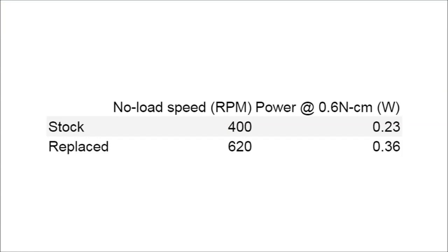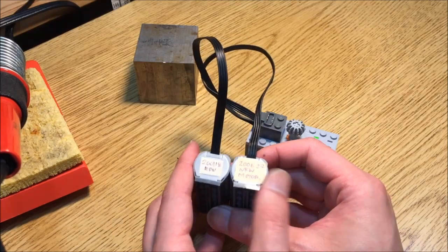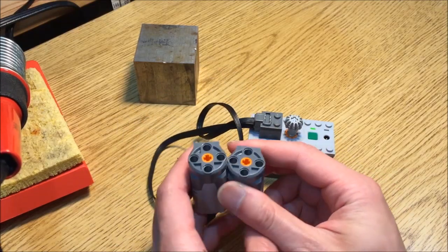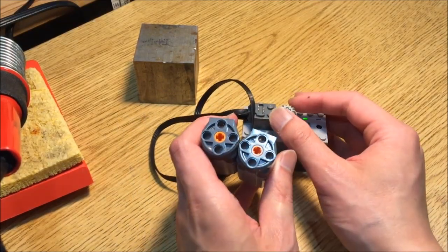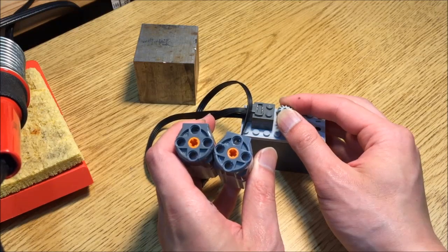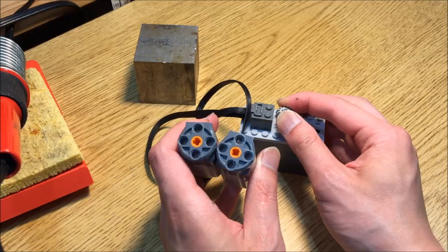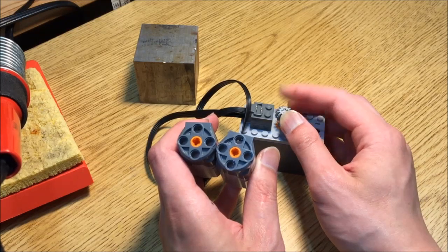It ran faster and generated more power than a standard M motor, which might seem good but not in the context of something like GBC. I might have measured something wrong or the motor might not have met the listed spec, but either way I decided to look at the commutator situation again.